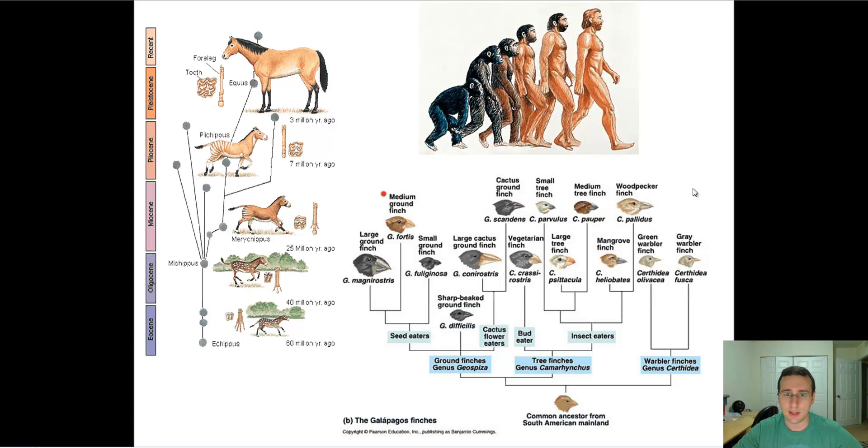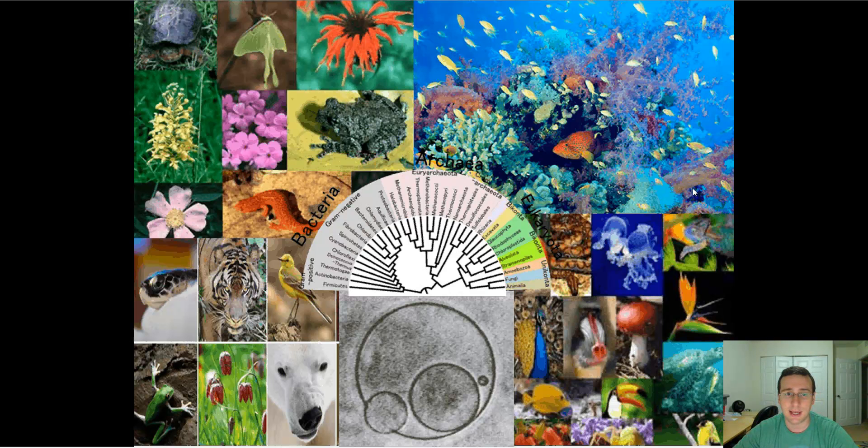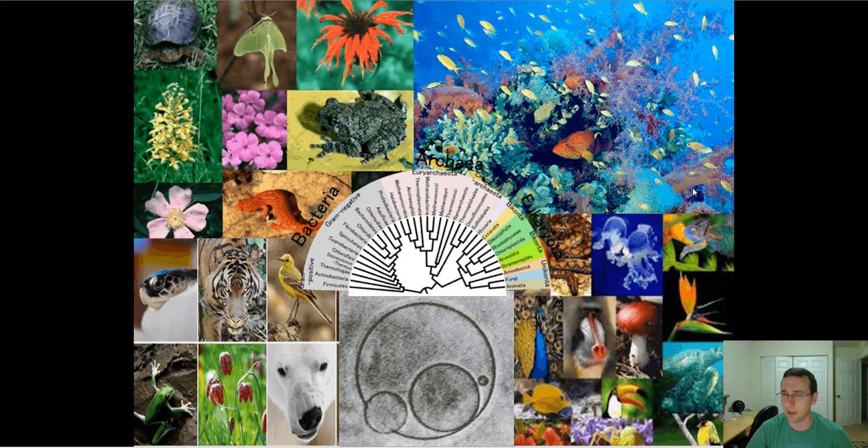It's the ultimate conclusion if you think about the fact that all life comes from previous life. You have to accept at that point then that if you keep going backwards in time, all life must have come from one original life form or that single cell. We'll talk a little bit more about this, the rationale for this when we do evolution later in the year.